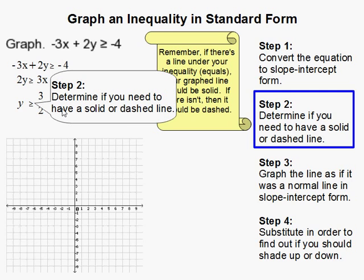Then we need to see if we need a solid line or a dashed line, so it's pretty easy. Since there's a line underneath it, that means it's a solid line. If there was no line it would be dashed.